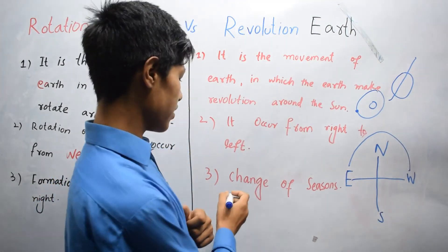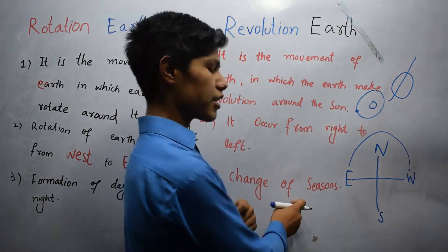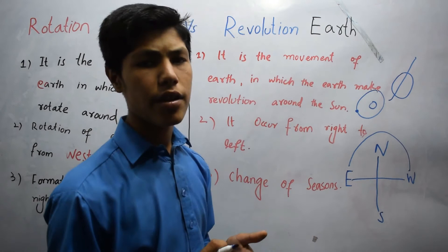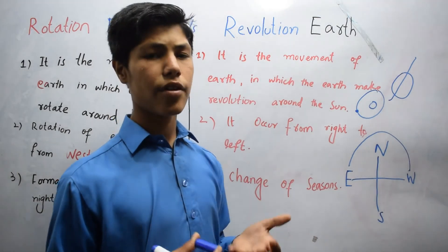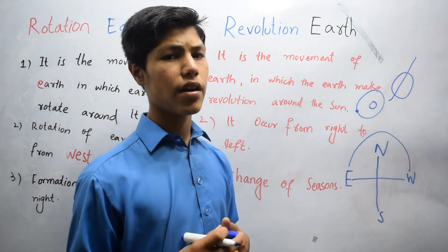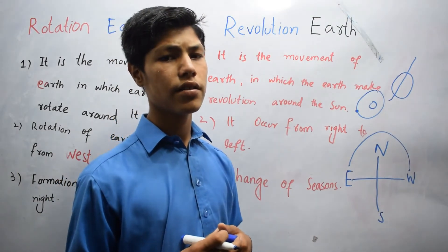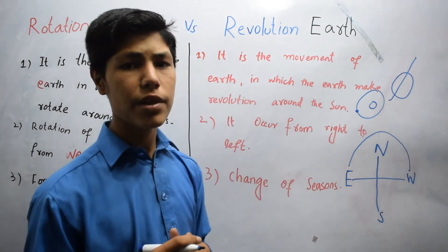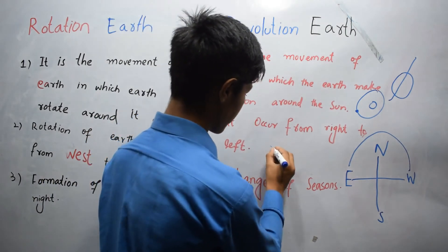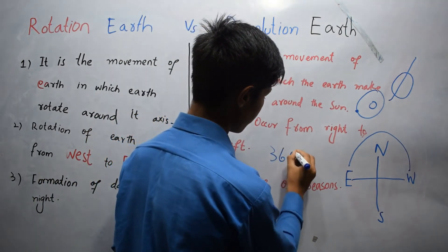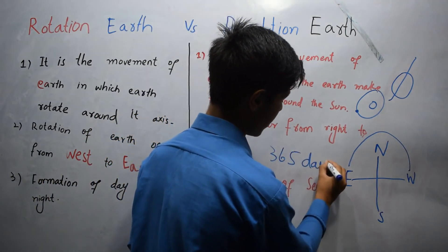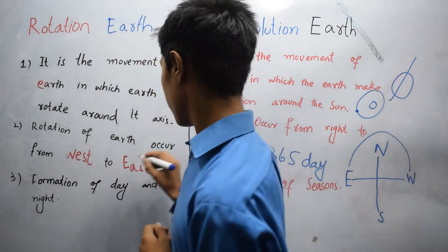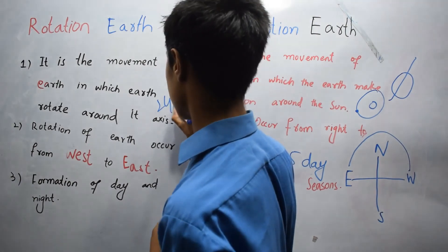The third point is its effect is the change of seasons — from autumn to spring, from winter to spring, etc. Its revolution completes in 365 days, and its rotation completes in 24 hours.